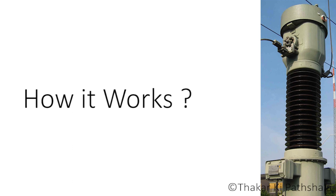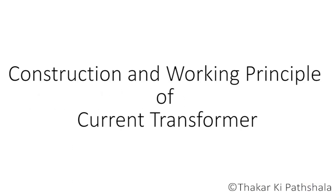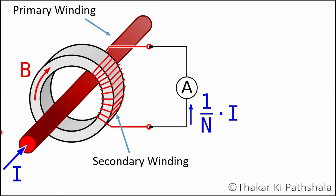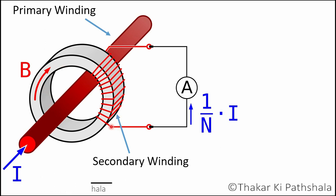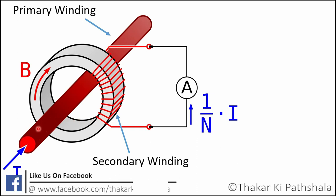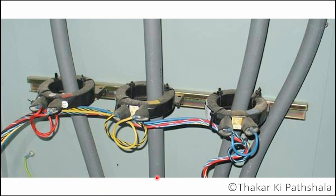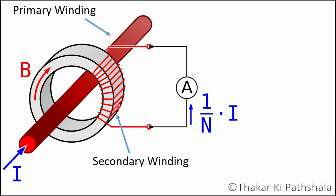Now let's look at the construction and principle on which a current transformer works. As shown in this figure, the general construction is similar to any other transformer — it also consists of two windings: primary and secondary. It transfers energy from one side to another with a suitable change in the level of current or voltage. The primary winding consists of one or more turns of wire of heavy cross-sectional area. In some cases the bar carrying high current may act as the primary. The primary is connected in series with the line carrying high current. The secondary is made up of a large number of turns of fine wire with small cross-sectional area, and is usually rated for 5 amperes.